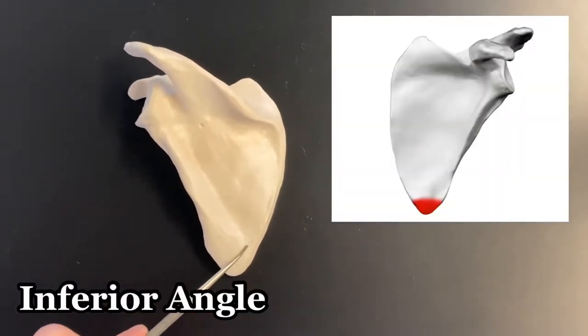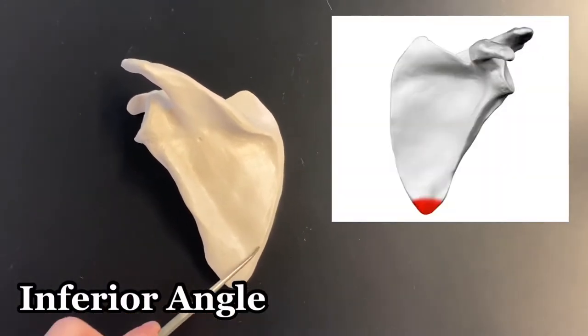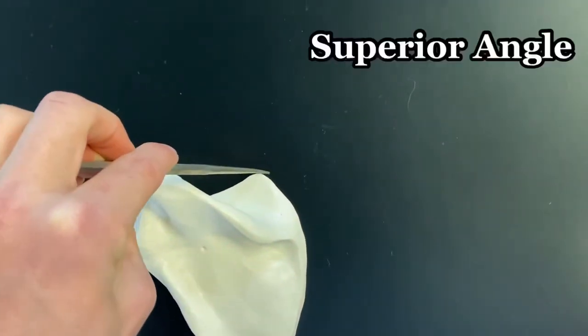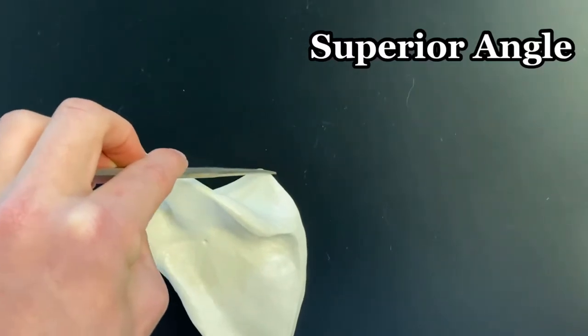Inferior angle is this angle at the bottom of the scapula. There's also a superior angle up top here, superior angle.